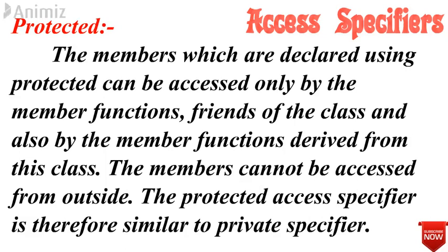The third type of access specifier is protected. The members declared using protected can be accessed only by the member functions of the same class, or they can be accessed using friend functions, and also by member functions derived from this class using the concept of inheritance. The member cannot be accessed from outside the class. Protected access specifier is almost similar to private access specifier.